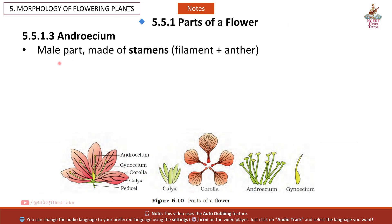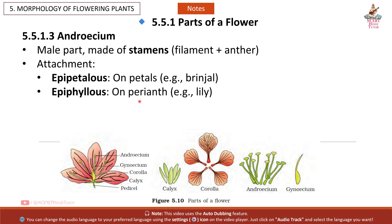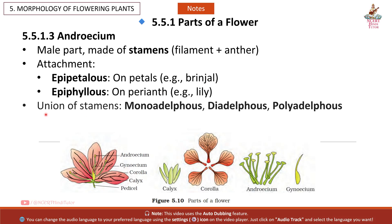Androecium: the male part, made of stamens (filament plus anther). Attachment types: epipetalous — on petals, e.g. brinjal; epiphyllous — on perianth, e.g. lily. Union of stamens: monoadelphous, diadelphous, polyadelphous.